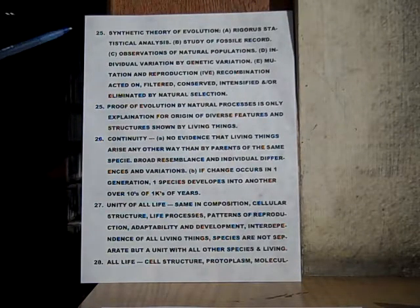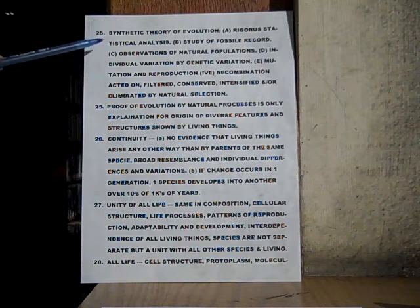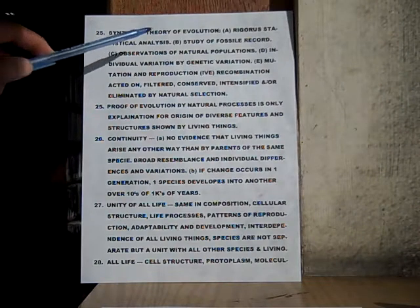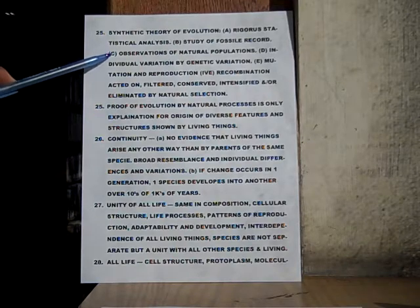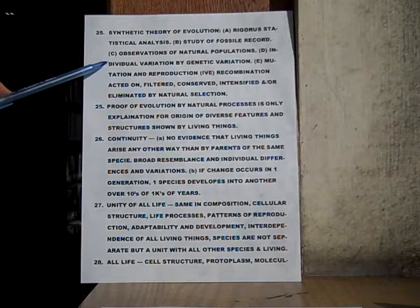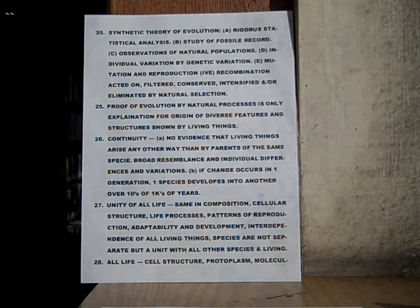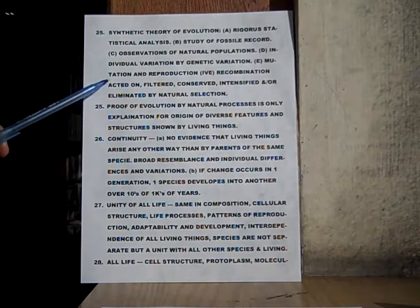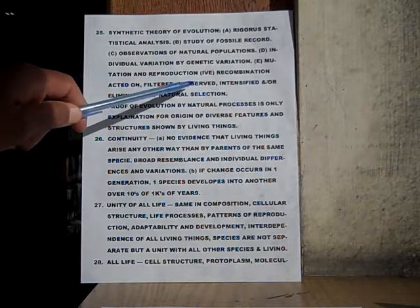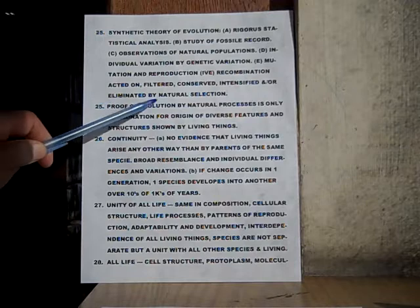Now we'll go to twenty-five: synthetic theory of evolution. This includes: A. Rigorous statistical analysis. B. Study of the fossil record. C. Observations of natural populations. D. Individual variations by genetic variation. E. Mutation and reproduction, as well as reproductive recombination — acted on, filtered, conserved, intensified, and/or eliminated by natural selection.